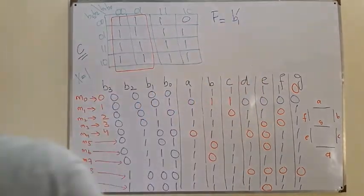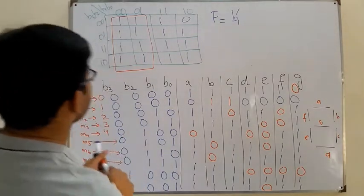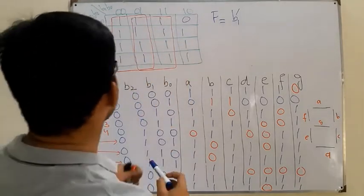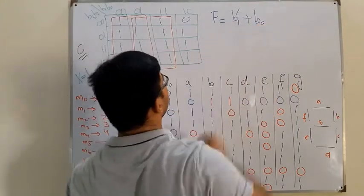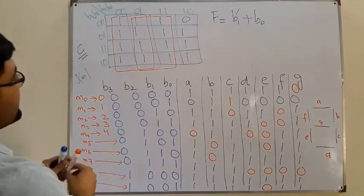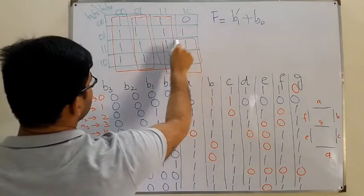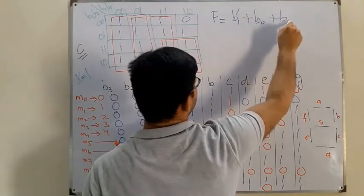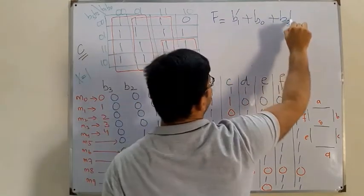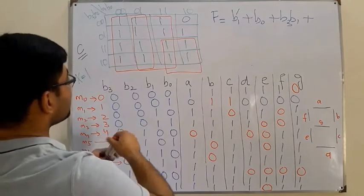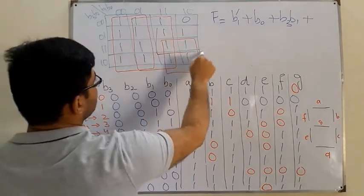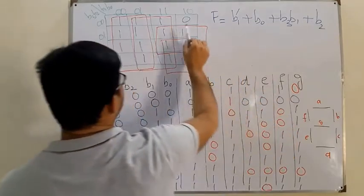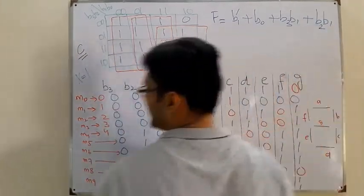The next group of 8 ones has B0 not changing, giving plus B0. Then a group of 4 has B3 and B1 not changing, giving plus B3·B1. One cell remains which groups into a group of 4, giving plus B2·B1. This is the initial expression for C.